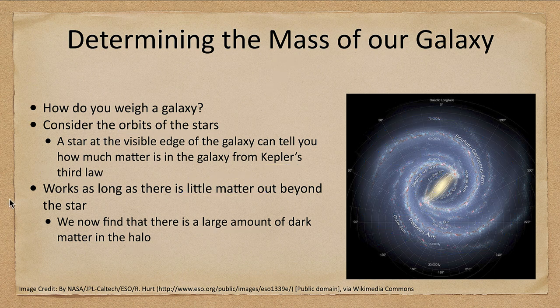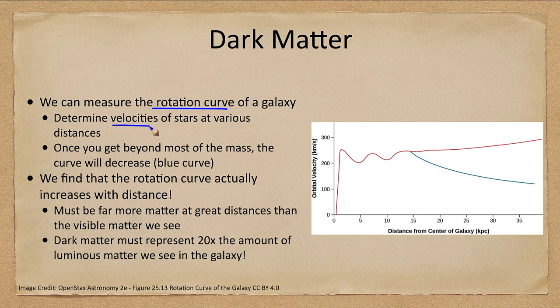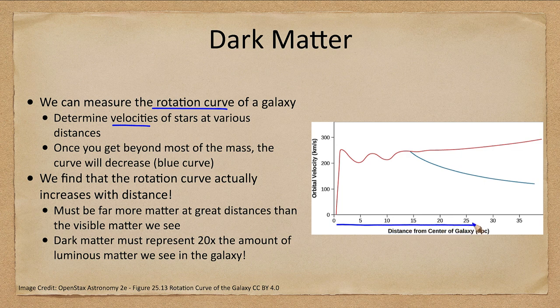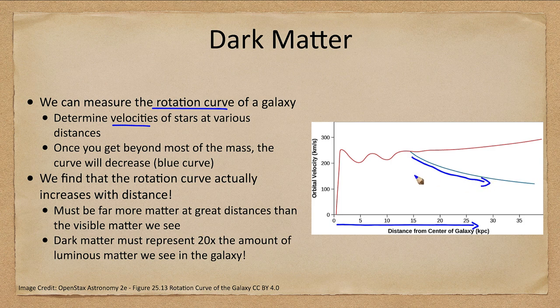So what is dark matter? If we measure the rotation curve of a galaxy, looking at how fast stars are moving at various distances, we can determine where the mass is. Eventually we expect the blue curve here, that means we've gotten outside most of the mass and the velocities will drop off with distance. However, what we actually find is the red curve: velocities continue to increase.